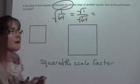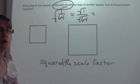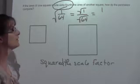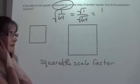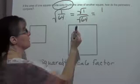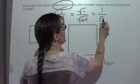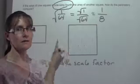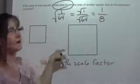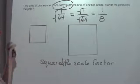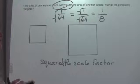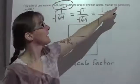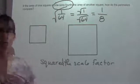I need the square root of 1 over the square root of 64. What times what equals 1? A square root has to be the same number times itself. 1 times 1 is 1, so the square root of 1 is 1. For the square root of 64, 8 times 8 is 64, so the square root of 64 is 8. How do my perimeters compare? The perimeter of this square is 1/8 the perimeter of the other square, or this square is 8 times larger. Because they gave me the area, they had already squared the scale factor. To take it back to a side length or perimeter, I had to square root it.